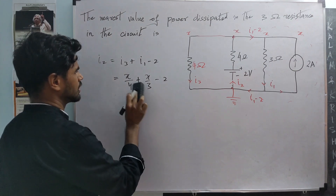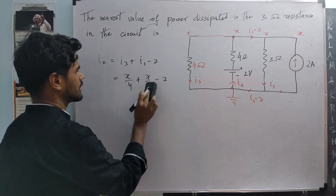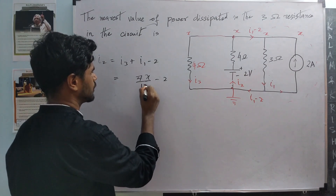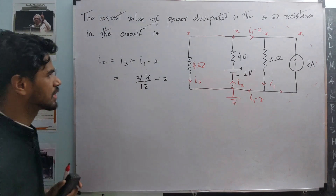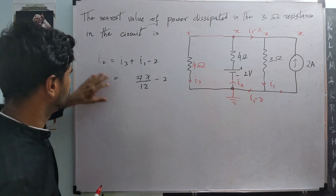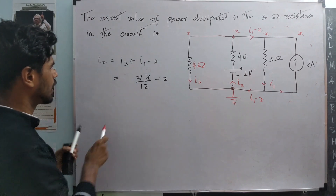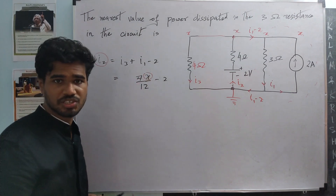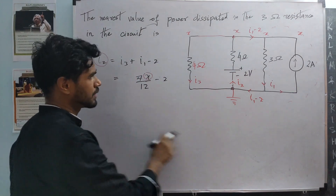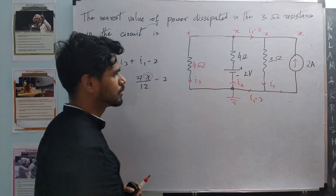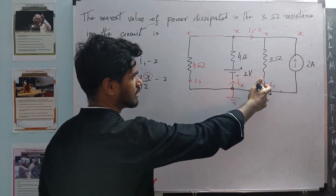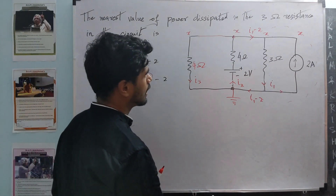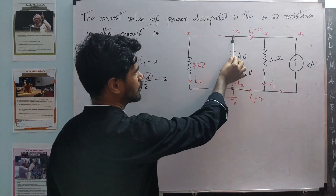So the first relation is: I2 equals 7x by 12 minus 2. At this stage we have a relationship between I2 and x. If we have one more relationship between I2 and x, we can solve for both. And if we solve for x, we know I1, which is x by 3. We need one more equation relating I2 and x.